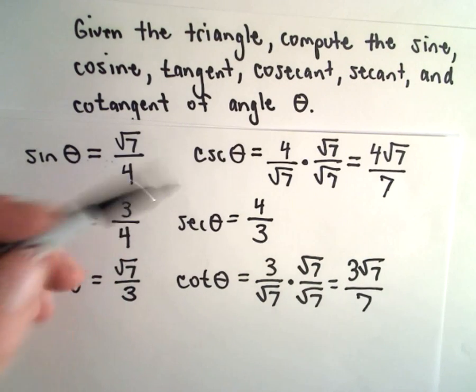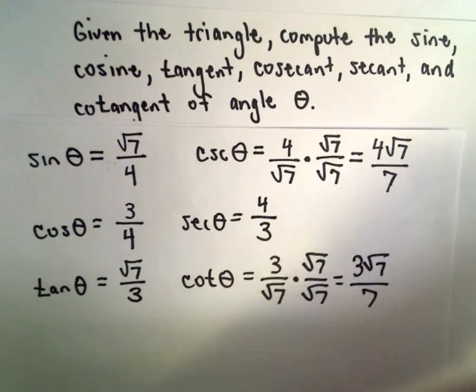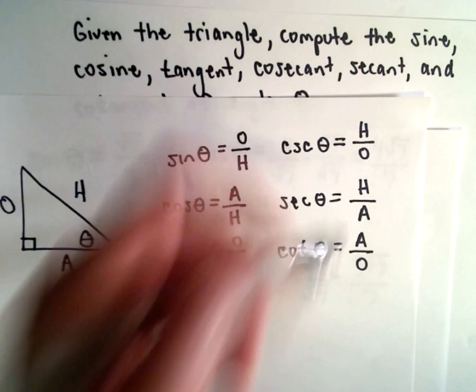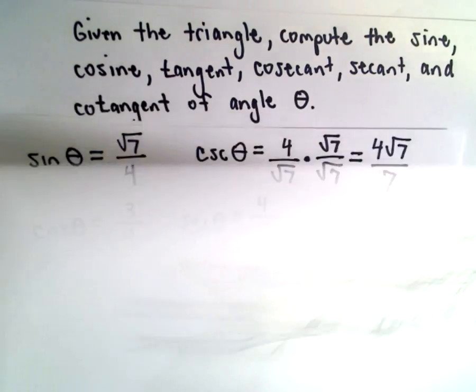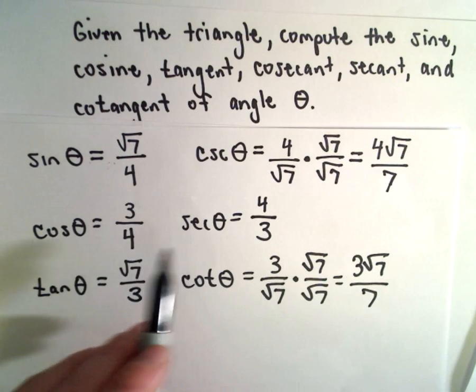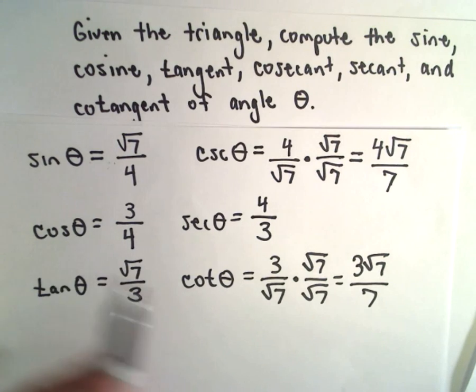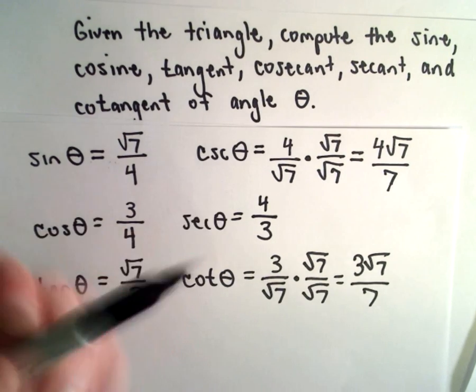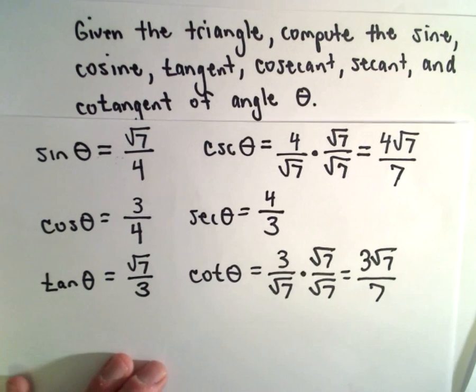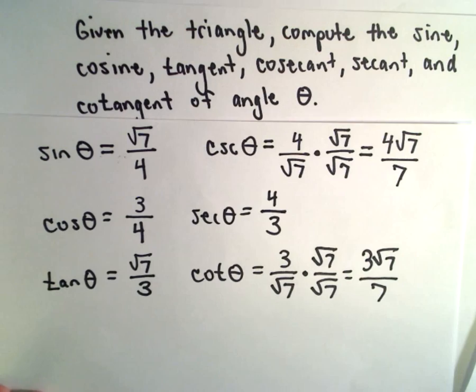Again, you can also think about cosecant, secant, and cotangent in terms of ratios of side lengths of the triangle. But to me it's much easier, if I can remember cosecant goes with sine, secant goes with cosine, and cotangent goes with tangent. To me it's easier just to take the flip of the fraction and simplify it, or rationalize the denominator if I need to.